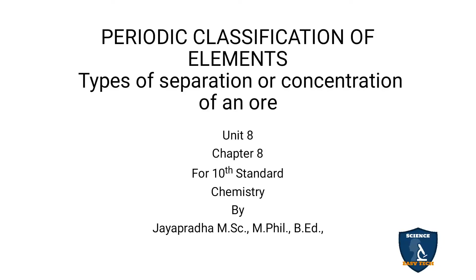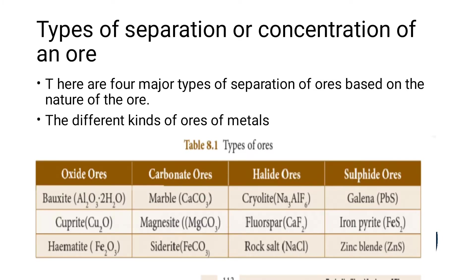Today our topic is types of separation or concentration of ore in periodic classification of elements, Unit 8, Chapter 8 in chemistry. In the last class, we saw the terminologies in metallurgy — what ore is, how it differs from a mineral. Today we are going to see the types of separation or concentration of an ore.